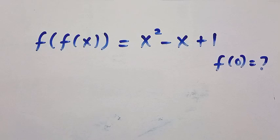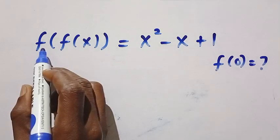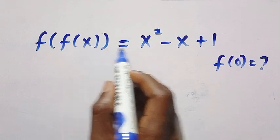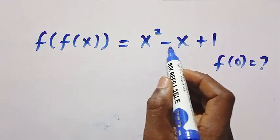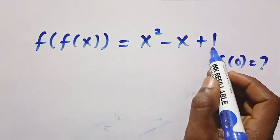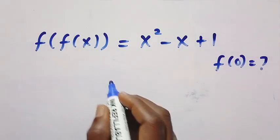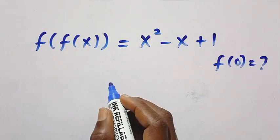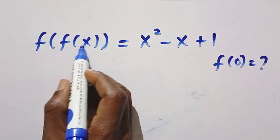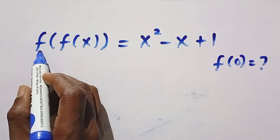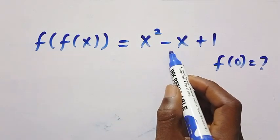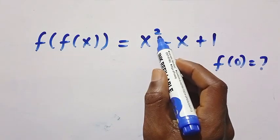Good day viewers, you are welcome. How to solve these nice functional equations? We have f of f of x equals x squared minus x plus 1. And what is f of 0? This is a composite function because we have a function inside another function. And on this side, we have a quadratic because of the power of 2.